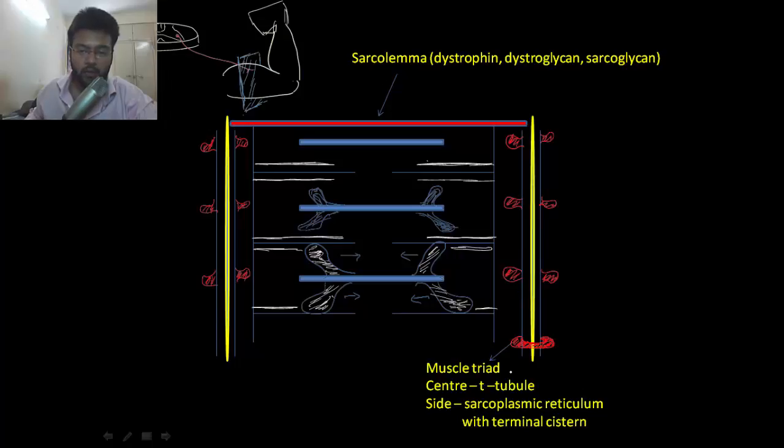In the center you have the T-tubule or transverse tubule, which allows the inward spread of signal. On the side you have sarcoplasmic reticulum with terminal cistern,